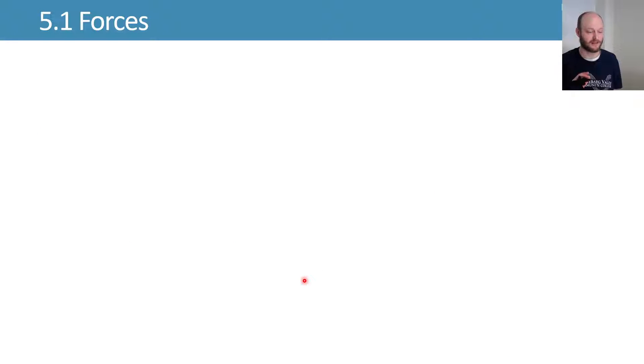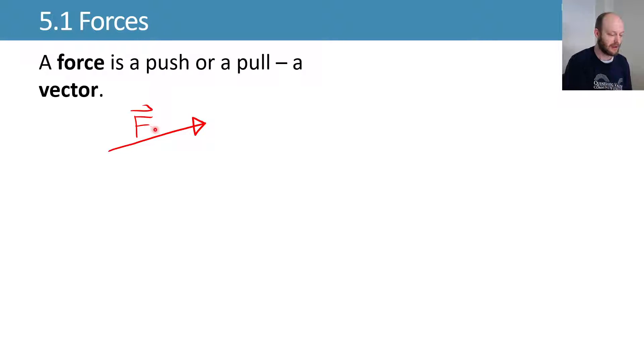Forces are pushes or pulls. They're vector quantities, which means that they have a magnitude and a direction. We represent them as an arrow, that's the direction, and the length of the arrow is proportional to the magnitude. We'll put this arrow over the top to represent that this is a vector quantity.